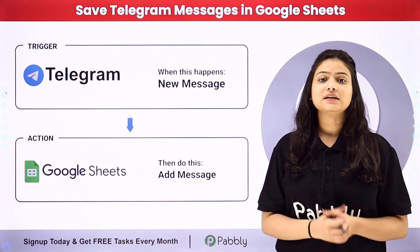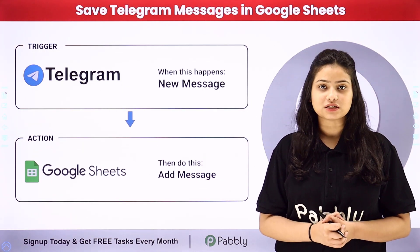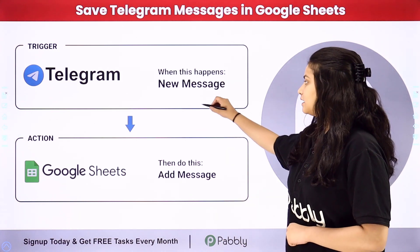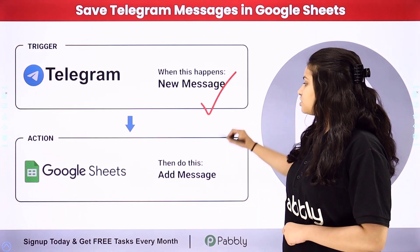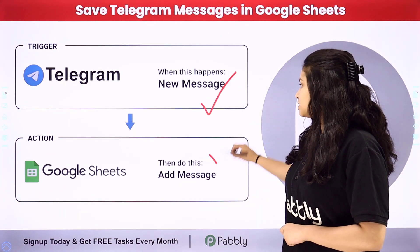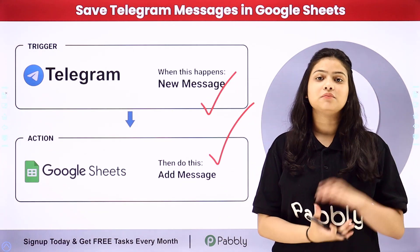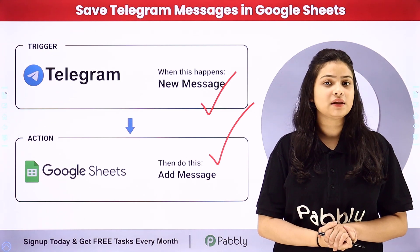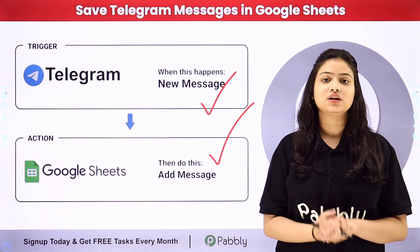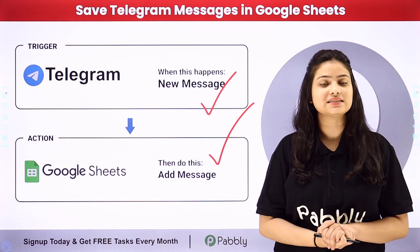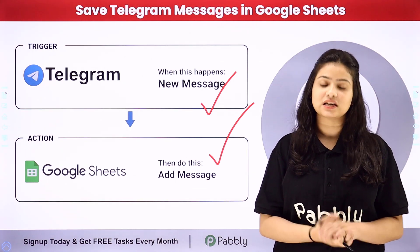Pabbly Connect works on two principles: trigger and action. In the trigger we are going to take Telegram, and in the action we are going to take Google Sheets. We will set up a connection between these two applications without any coding or programming skills to automate this entire process.